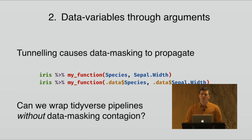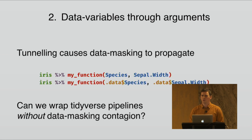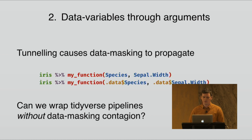One issue with tunneling is that it causes data masking to propagate. Now your function is also a data masking function because you can supply data variables in it. That means the users of your function will have to know about that — they will have to know about the ambiguity, and if they are writing production code they will have to know about the curly-curly operator if they want to write a function around your function.